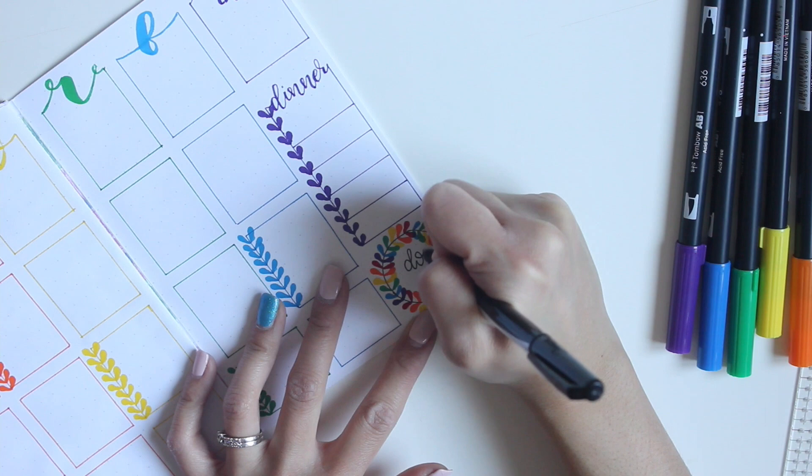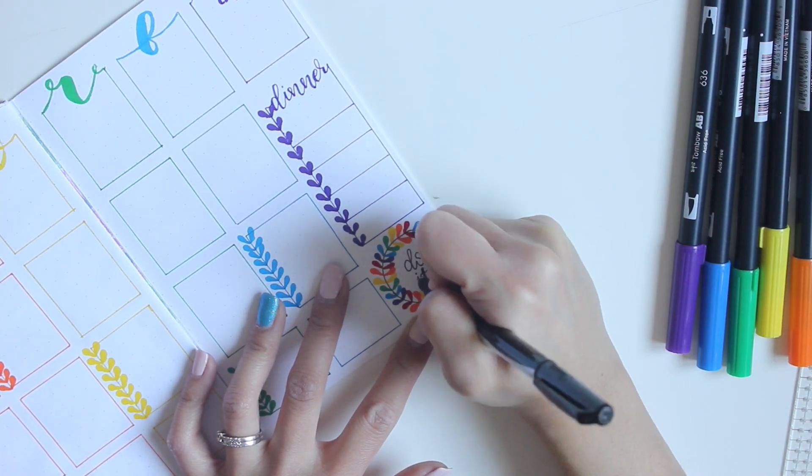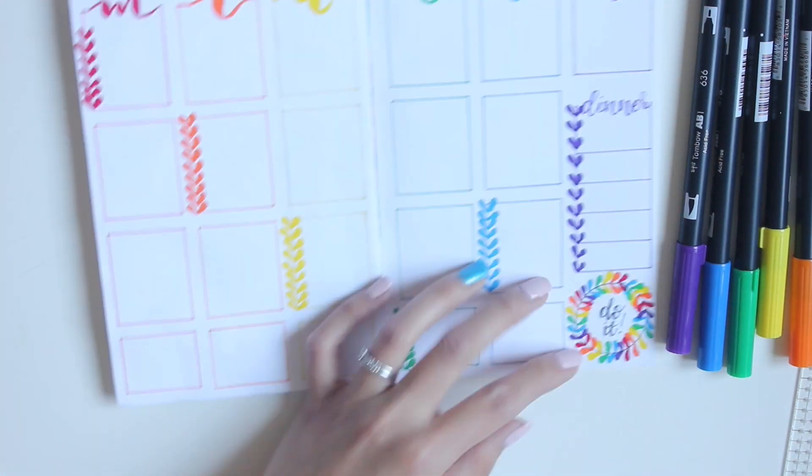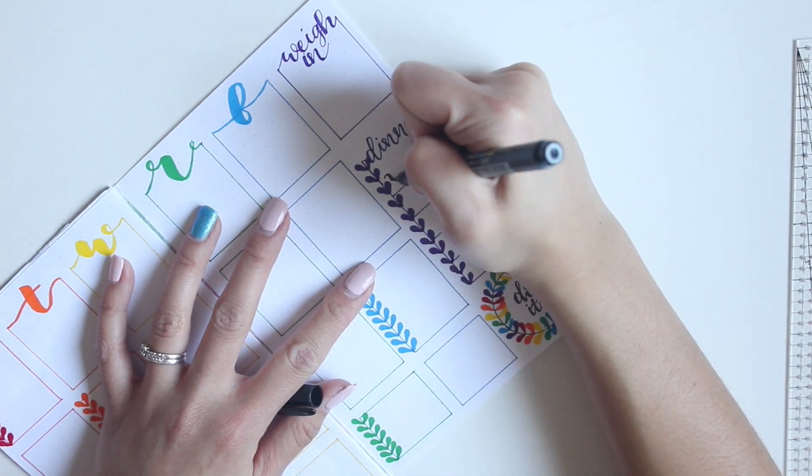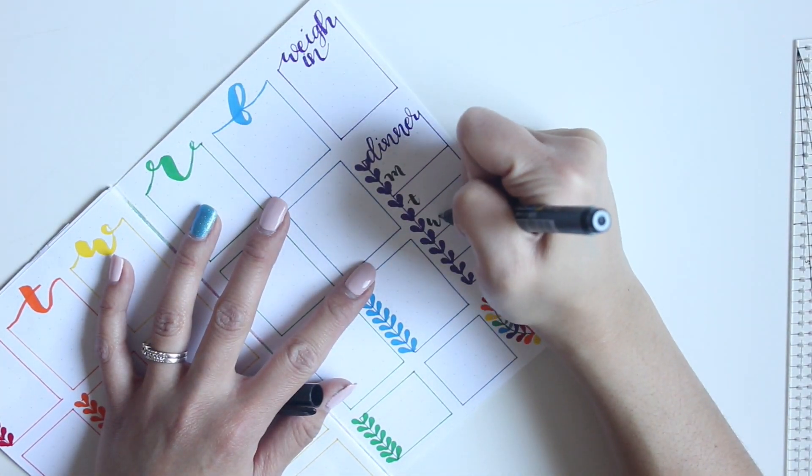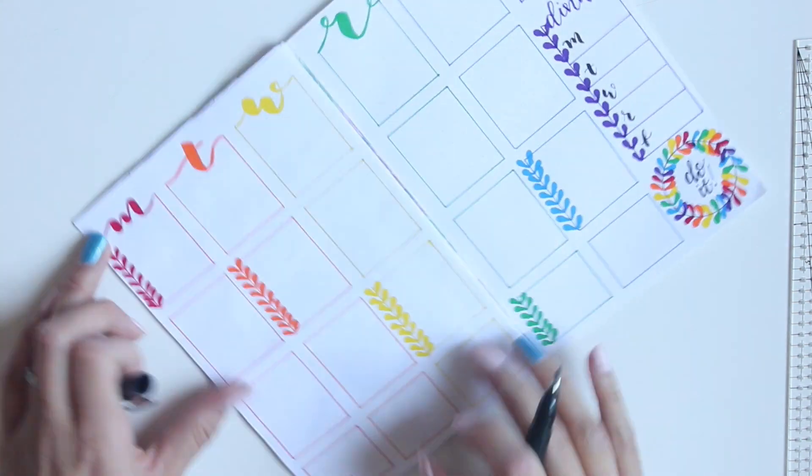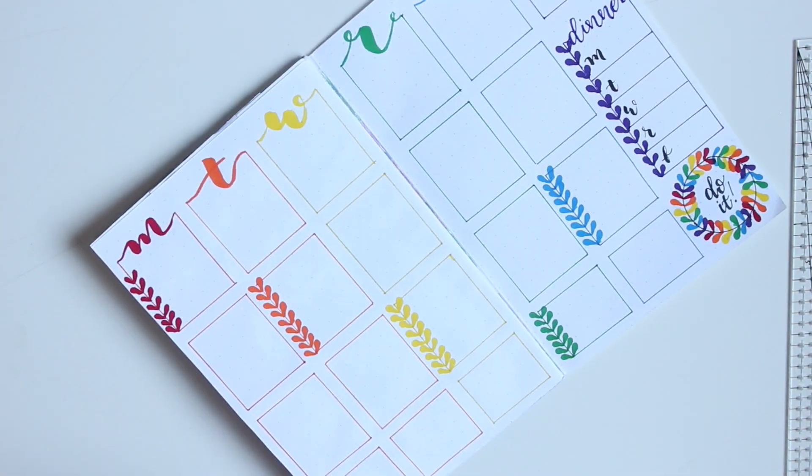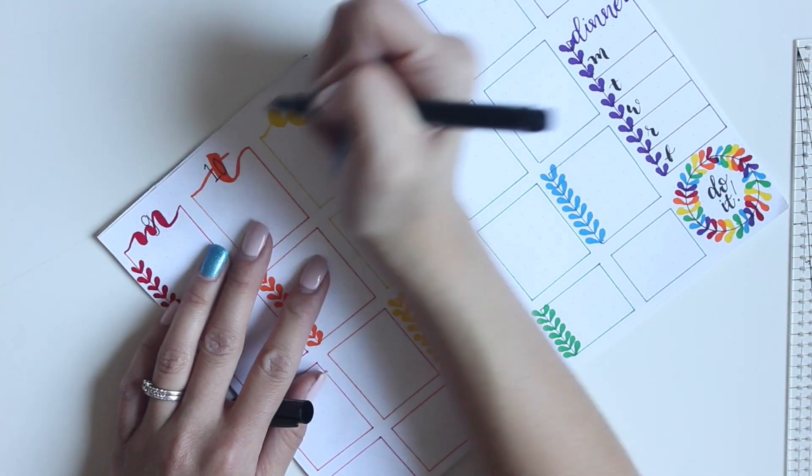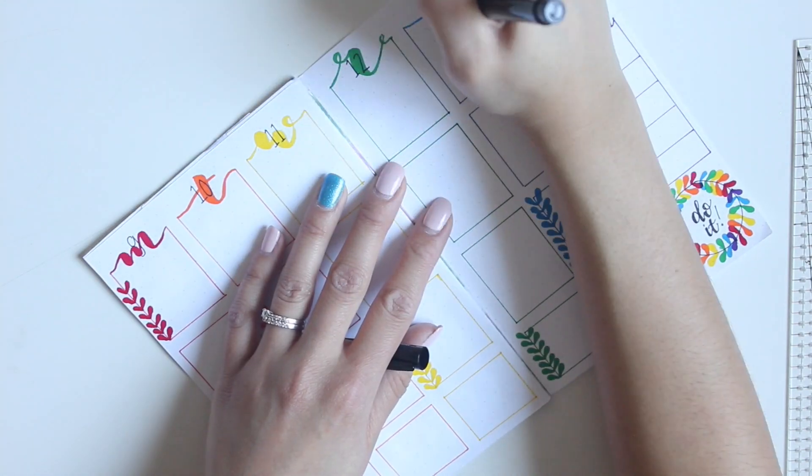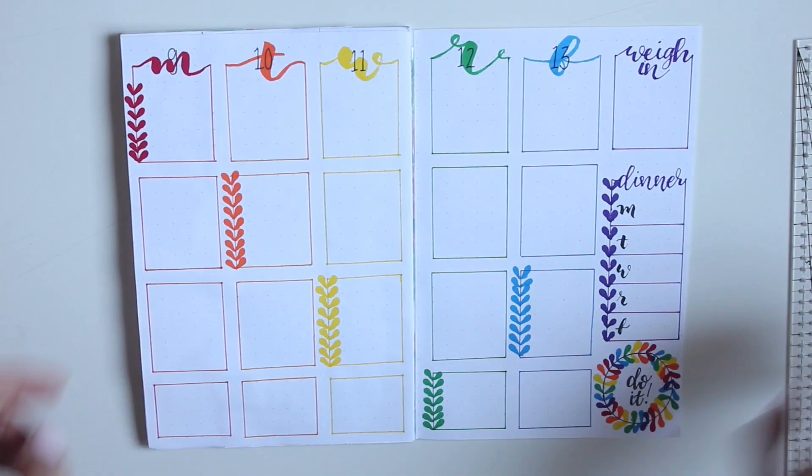But otherwise I love the way that it looks. I just thought I'd write a little quote there that says 'do it.' And then with my Tombow Fudenosuke pen, write in the days of the week for dinners. And that's it for me.